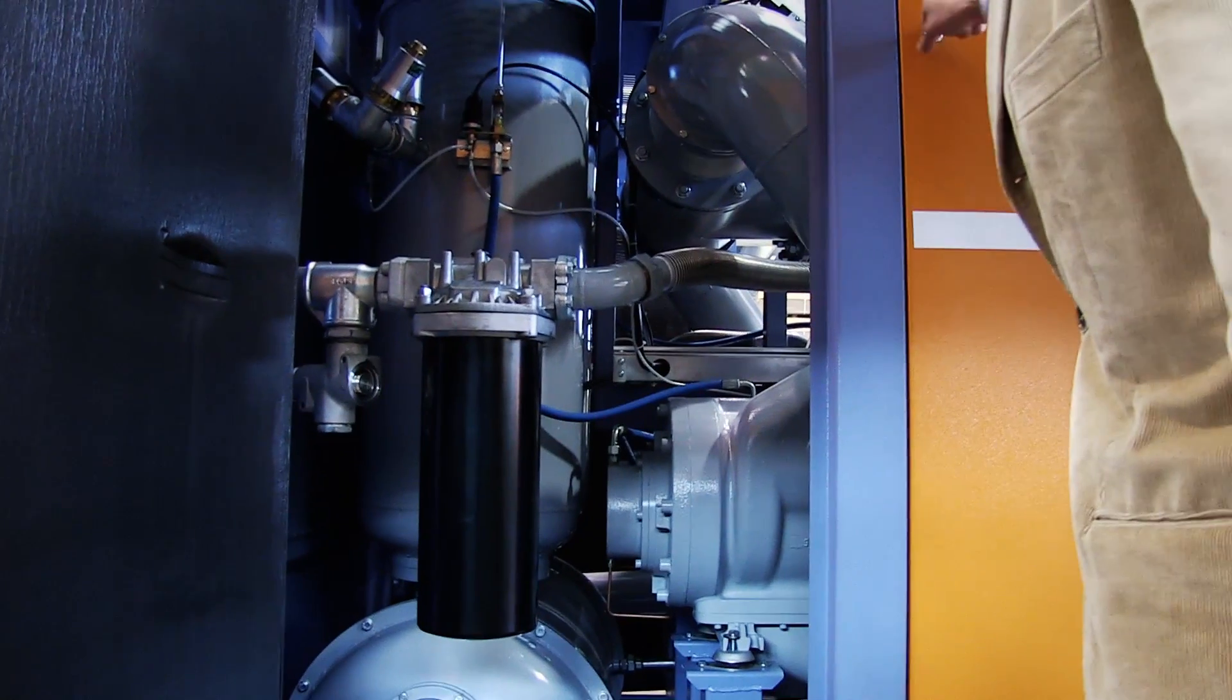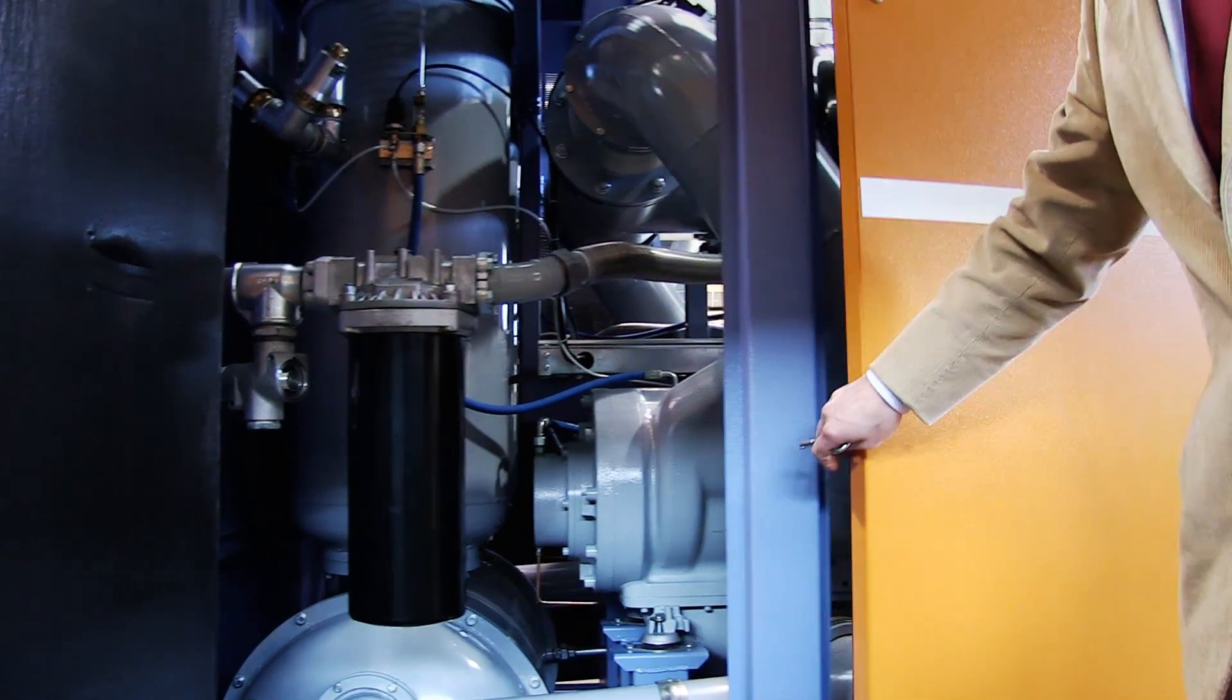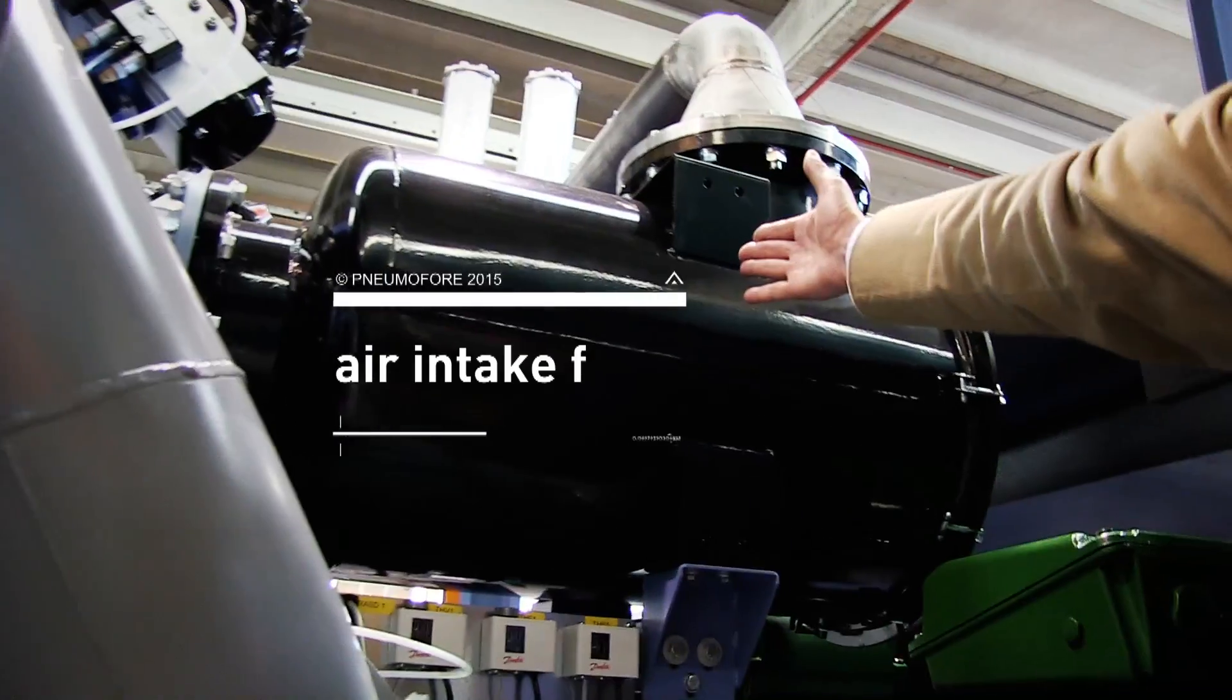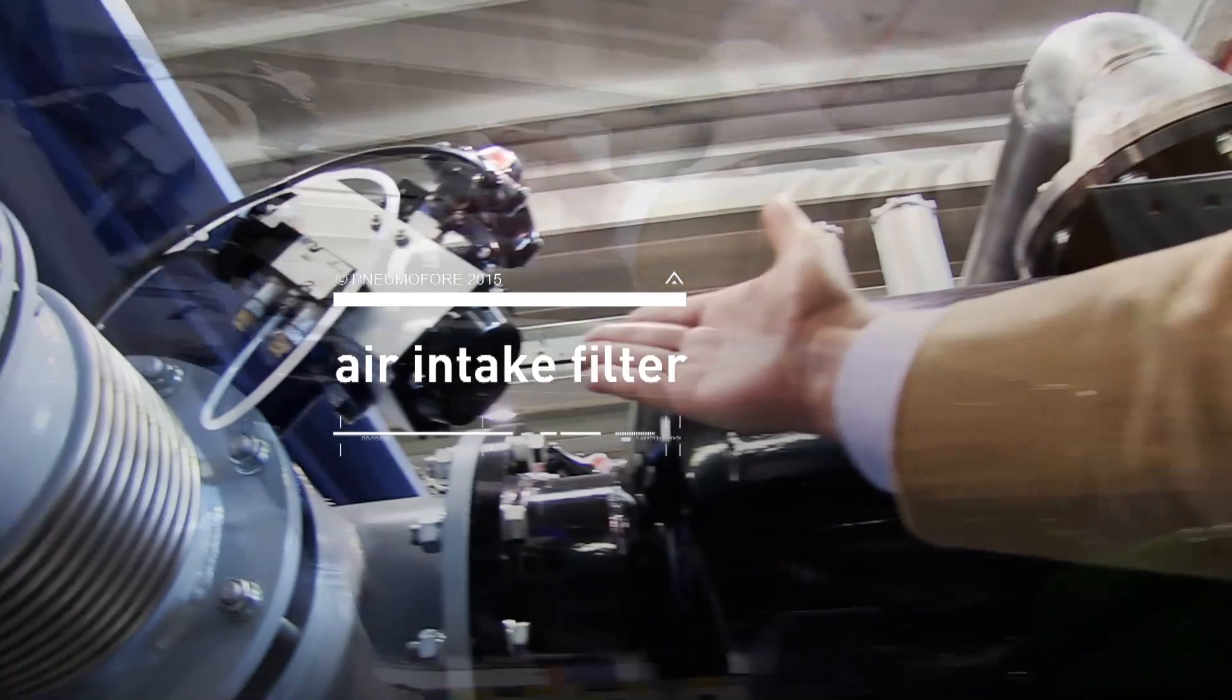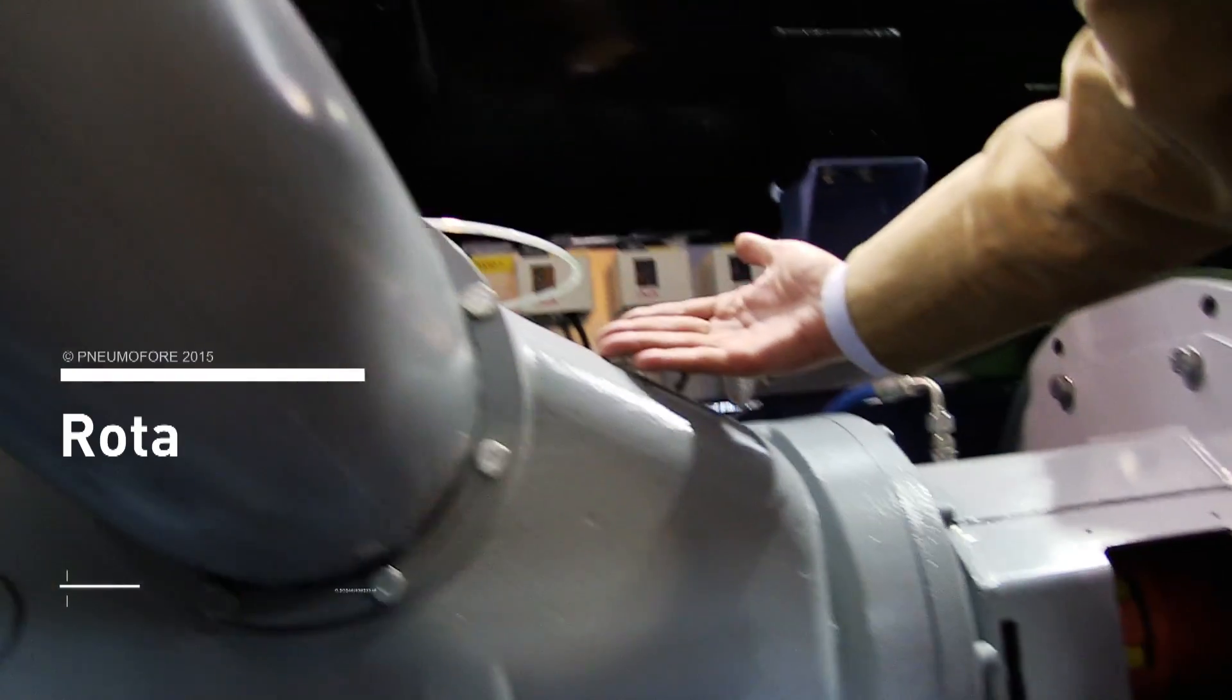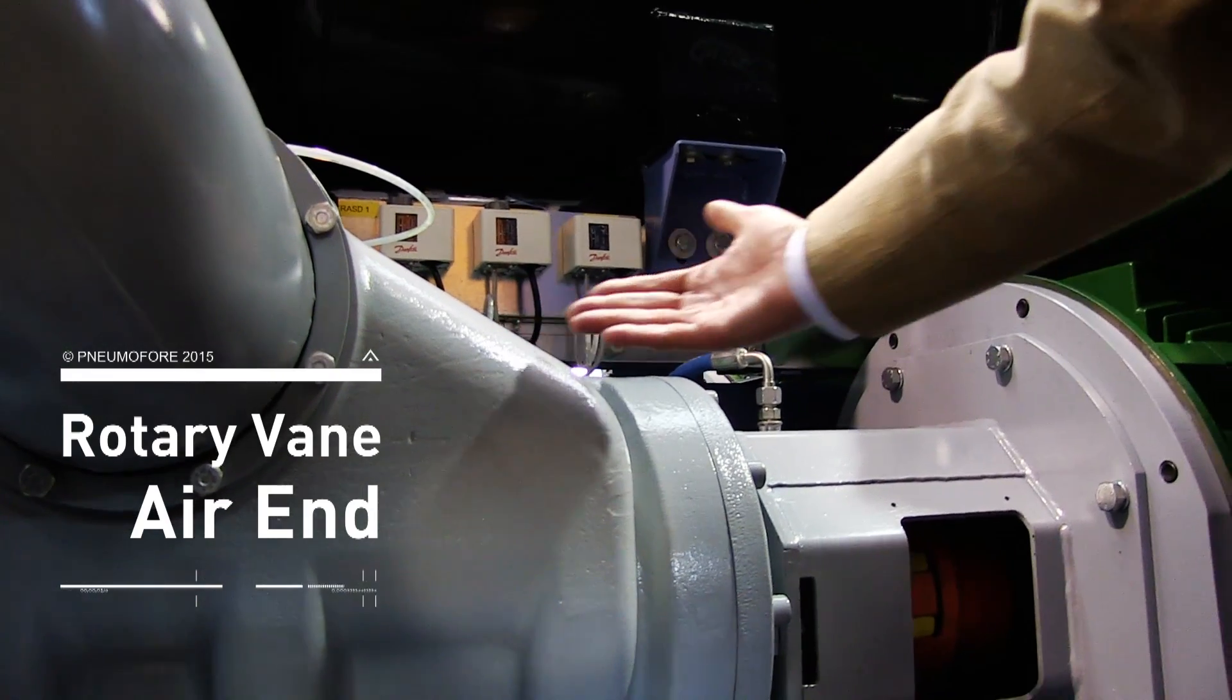We can easily open the doors. All it takes for the correct lubrication and cooling of the machine. We have the air intake filter, the inlet valve on top, and the rotary vein air end UV50 here.